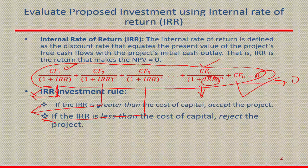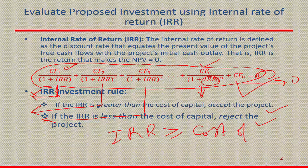Now, how do you use IRR to decide whether to undertake an investment project or not? The simple rule is: if IRR is greater than or equal to the cost of capital, you undertake that project because it returns a higher rate of return than your cost of capital. Conversely, if IRR is less than the cost of capital, you do not undertake that project because the rate of return on that investment is less than the cost you have to pay to finance it.